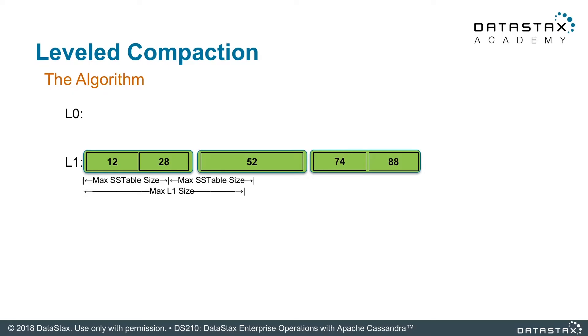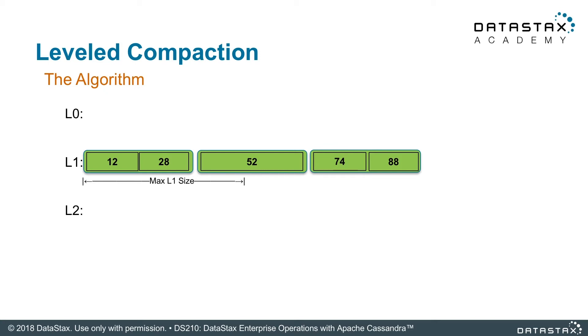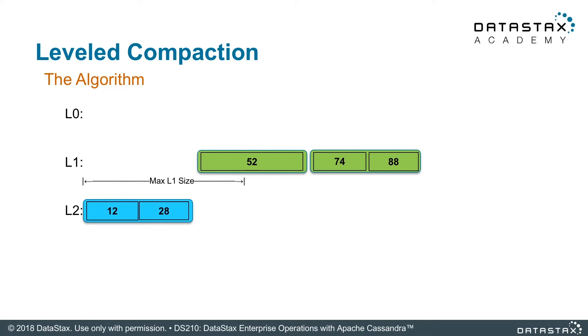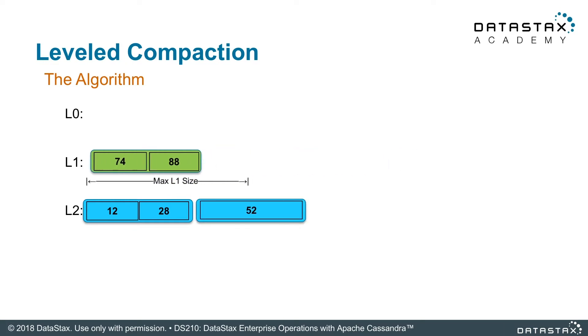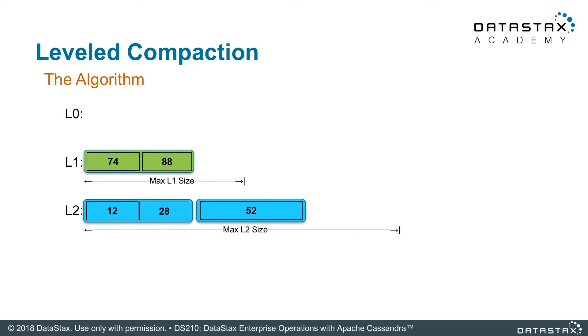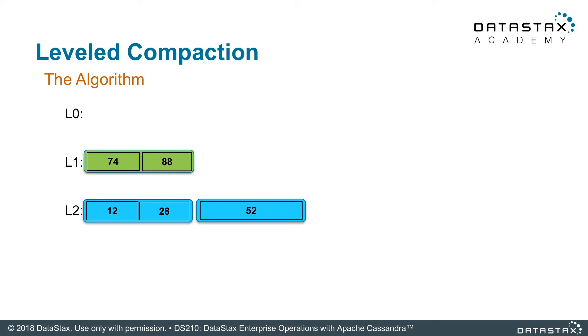The max level one size is a multiplier of the max SSTable size. In this example we're going to say two, but in the real world it's 10 - that's the default. So if max L1 size is two times the max SSTable size, that's how much we can store in level one. We're over, so we need to trigger another compaction. We have to create a level two to fit more data and satisfy the leveling. We move a file down to level two, do a size check - still over - so we move another file down. Now everything fits. Level two max size is also a multiplier, two times level one, so you can see how it starts growing.